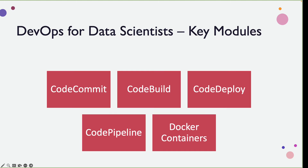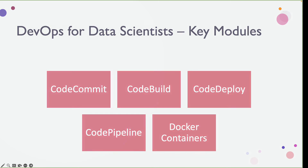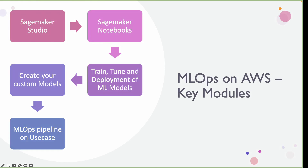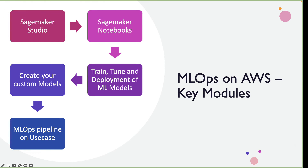Some of the key modules under DevOps for Data Scientists include working with CodeCommit, CodeBuild, CodeDeploy, CodePipeline, and the concept of Docker containers. Moving on to the advanced sections of this course.